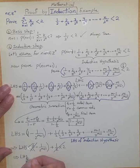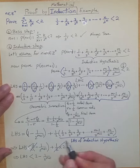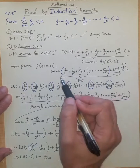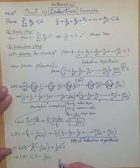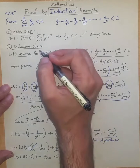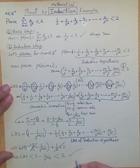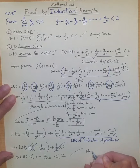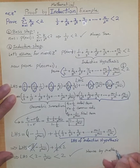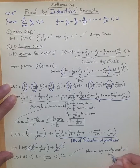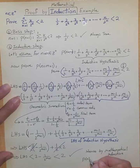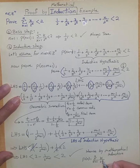So the left-hand side is less than 2 - 1/2^(m+1), which is definitely less than 2. Therefore, we have proved the inductive step. Hence, by mathematical induction, the general statement that the sigma sum from k=1 to n of k/2^k < 2 for any positive integer n is proved.